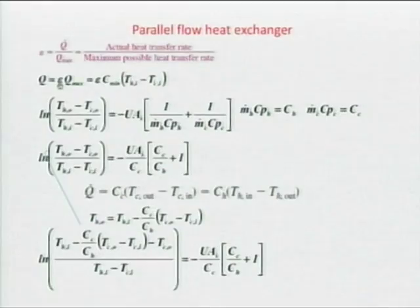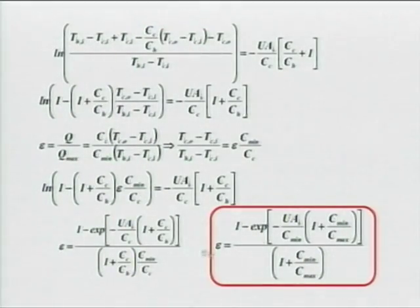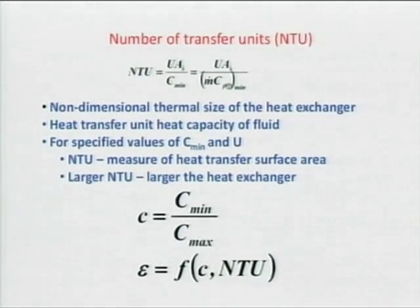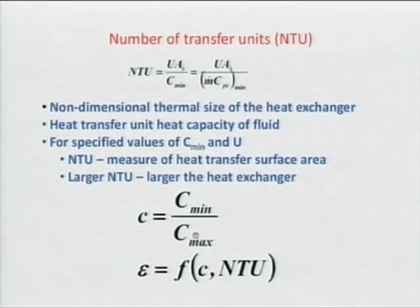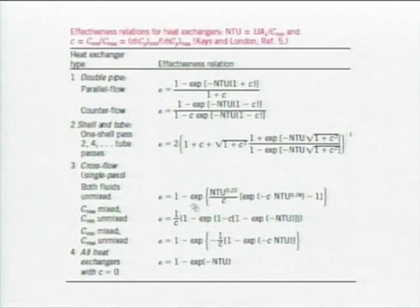As a reader and teacher, I get stuck at certain places, and most likely students will too. That is why I am concentrating on those locations and going fast through the rest. NTU is U·A divided by m-dot-Cp-minimum — it captures the size of the heat exchanger. Effectiveness is a function of the ratio of m-dot-Cp values and NTU. For all configurations, Kays and London have derived and given us these relations.